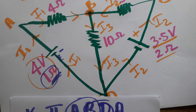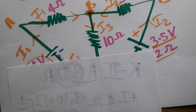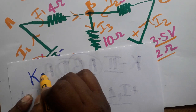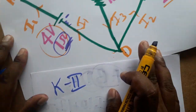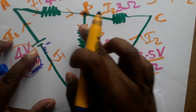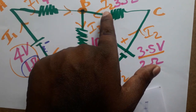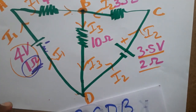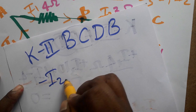Note on loop direction: if the loop direction matches the current direction, take it as positive; if opposite, take it as negative. Now I take the second loop: B-C-D-B.